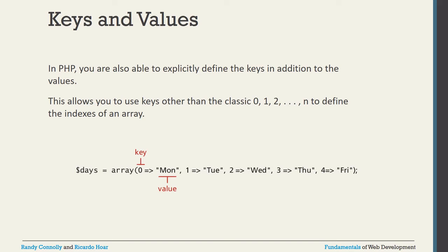Sometimes you have to use the array key and value together. In PHP you can explicitly define the key in addition to the value, allowing you to use keys other than the classic 0, 1, 2, n indexing. For example: dollar-days equal to array(0 => 'Monday', 1 => 'Tuesday', 2 => 'Wednesday'). Using the arrow symbol (=>) you can define key-value pairs for n number of elements.